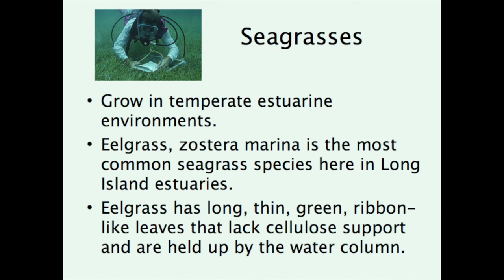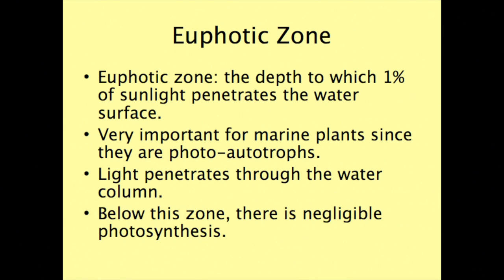Seagrasses grow in temperate, estuarine environments. Eelgrass, Zostera marina, is the most common seagrass species on Long Island estuaries. Eelgrass has long, thin, green, ribbon-like leaves that lack cellular support and are held up by the water column. They live in the euphotic zone — the depth to which 1% of sunlight penetrates the water's surface — which is very important for marine plants since they are photo-autotrophs. Below this zone there is negligible photosynthesis.